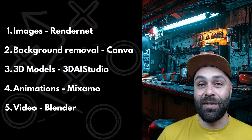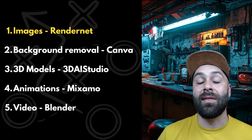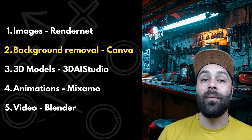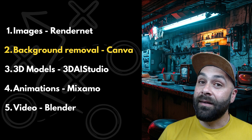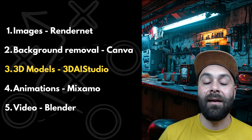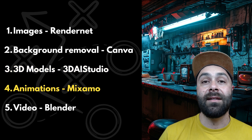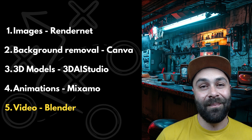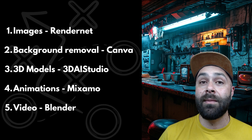Here's the flow and tools we'll use: designing characters and assets with RenderNet using its Canvas feature; background removal with Canva — this part is optional; then create 3D models with 3DA Studio; animate characters with Mixamo; and finally add the assets to the character and create the final animation with Blender. You'll find all the prompts and links to the apps in the video description.